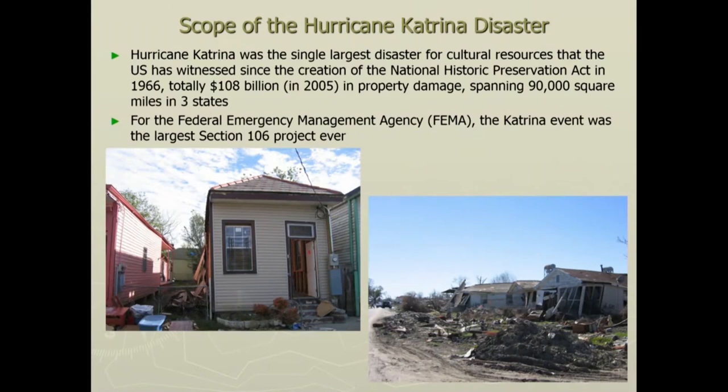There was over about $108 billion in property damage, and it spanned about 90,000 square miles across three different states — about the size of the U.K. So it's not a small disaster. FEMA, the Federal Emergency Management Agency, had to respond to that, and under Section 106 of the National Historic Preservation Act, this was one of their largest Section 106 actions.